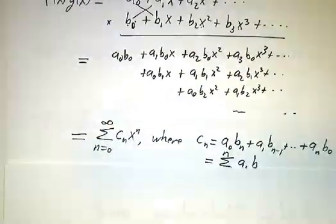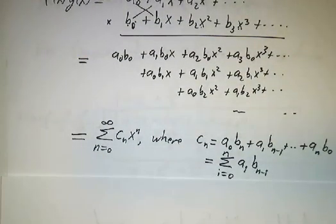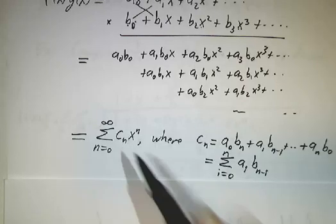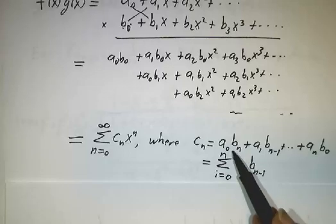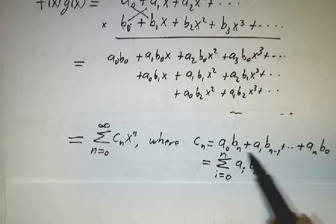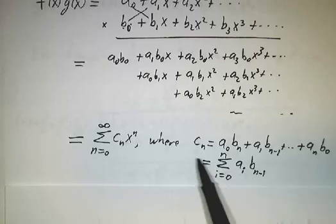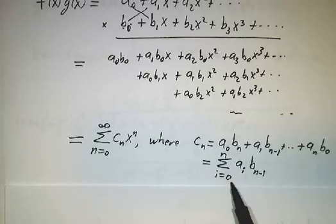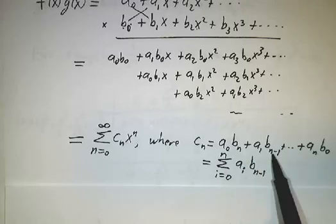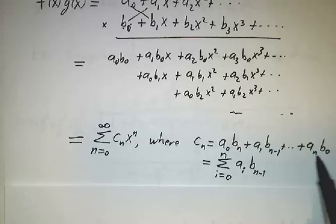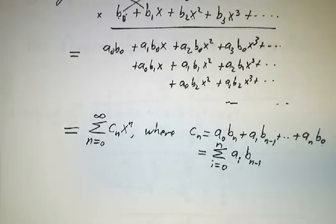So in general, you can take the product of things, you get a new power series where for the constant term you have one piece, for the first term you have two, for the nth term you have n plus one. In general, the nth coefficient of the product is going to be the sum of a0 bn, a1 bn-1, all the way up to an b0. So that's how you take products of Taylor series.